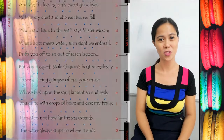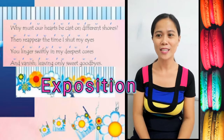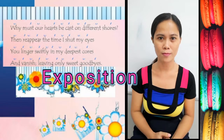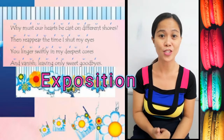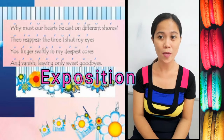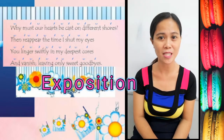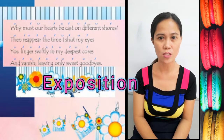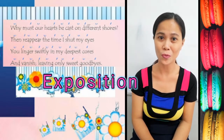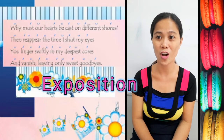The exposition is the first component of a Shakespearean sonnet. Like in storytelling, the exposition serves as an introduction where the problem or situation is presented. In this sonnet, it reads: 'Why must our hearts be cast on different shores, then reappear the time I shut my eyes, you linger swiftly in my deepest force, and vanish leaving only sweet reprise.' Reading it, you'd understand this is going to deal with a long-distance relationship. It starts with a rhetorical question.